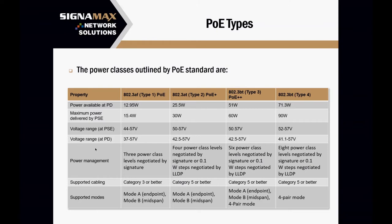Before the standards there were compatibility issues — if you got a PSE from one vendor and a PD from another, they might not work because they'd be using different pairs. The standard requires PDs to support both mode A and mode B. The terminology 'endpoint' and 'midspan' is sometimes incorrectly used for the modes, because one of the major companies created endpoints and the other midspans, with each using a different mode. In theory now, any PSE can be either mode A or mode B. In 802.3bt, a four-pair mode was introduced, making the distinction less relevant. Type 3 supports both two-pair and four-pair for backward compatibility; type 4 is purely four-pair.